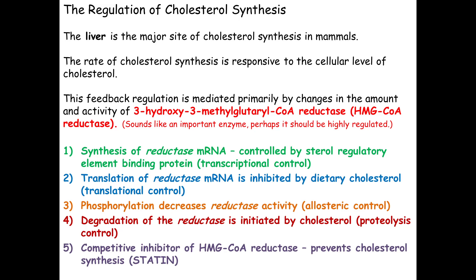So the cell says: for the few mRNAs that were made, let's shut this process down at the translational level. Cholesterol can bind to a couple of proteins that also recognize the HMG-CoA reductase mRNA by its secondary structure — mRNA can fold, forming double-stranded regions and hairpin loops. That particular sequence folds a certain way, and cholesterol bound to certain proteins recognizes it and will not let it unfold and go through the ribosome as a message. So we're shutting it down even more so at the translational level: for the few that were transcribed, we don't let them go through translation.